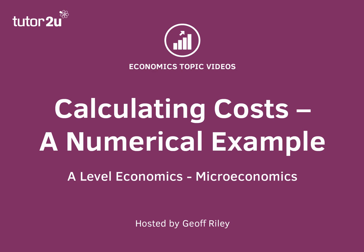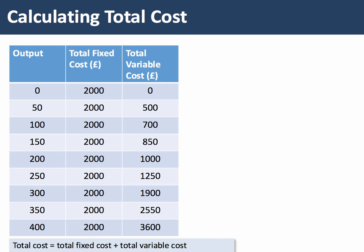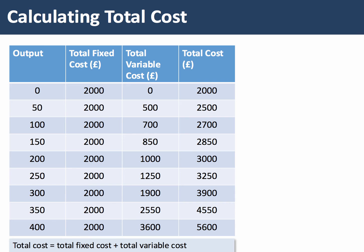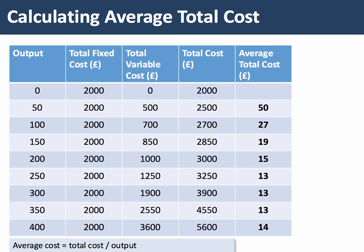Let's take a look at how you can calculate the costs of a business using a typical numerical example. We're looking here to calculate, first of all, total cost — that's simply the sum of total fixed cost, costs that don't change with output, and total variable cost. So total cost is TFC plus TVC, and that's the calculation if we do the two sums.